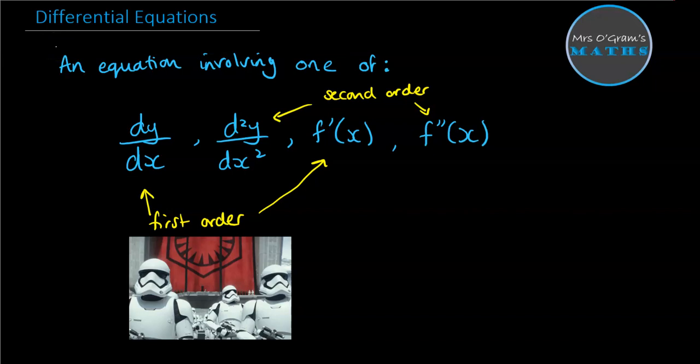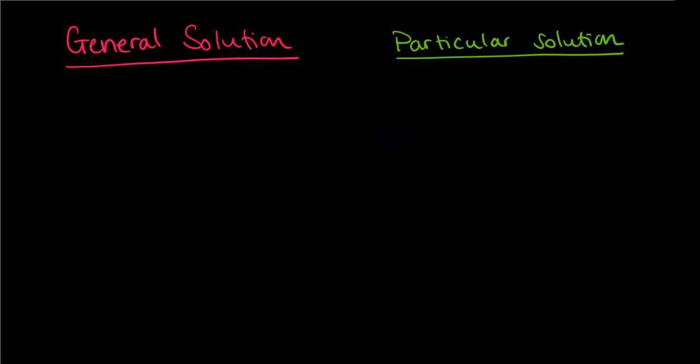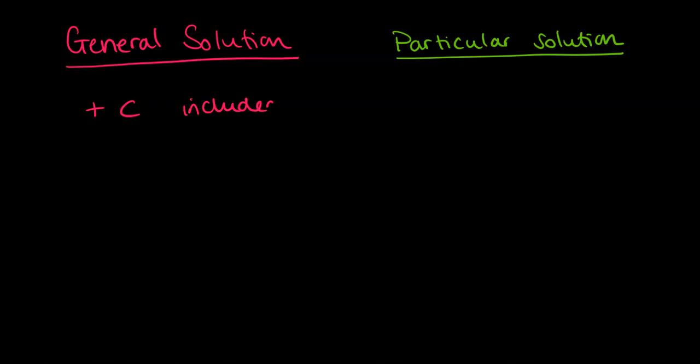Another little bit of jargon that you need to know about is a general solution and a particular solution. So a general solution is when you are basically just given the equation without any extra information. And so when you try and do some integration on it, you end up with a plus c is still there included in it. And there's not much more that you can do with it.